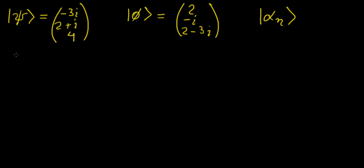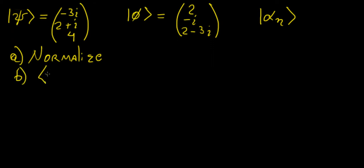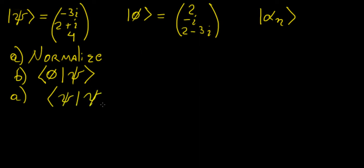The first thing we want to do is normalize the two eigenfunctions, and then after that we're going to find the inner product of phi with respect to psi and see what we get from that. For the first part, normalizing: we require that the inner product of the eigenfunction with itself is equal to 1.